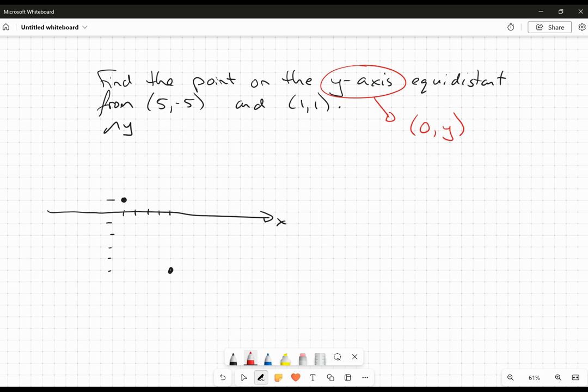Now, what's the y-coordinate? Well, I don't know, but it's going to be 0, y. So, somewhere on here, there's going to be a point, and I don't know exactly where it is. What I want to do here is there's going to be some point here, down here, where these two are the same.